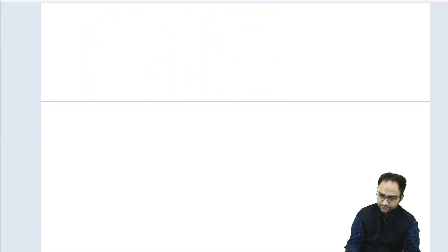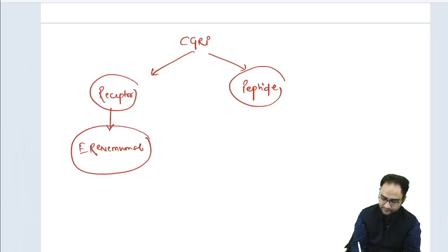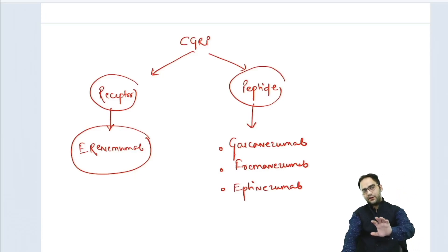It is divided into two types: one which acts on the receptor and one which acts on the peptide. The one which acts on the receptor is erenumab. And the ones which act on the peptides are galcanezumab, fremanezumab, and eptinezumab.